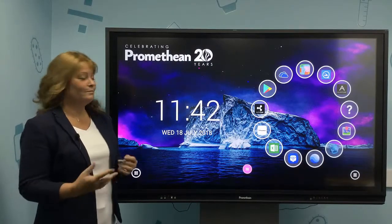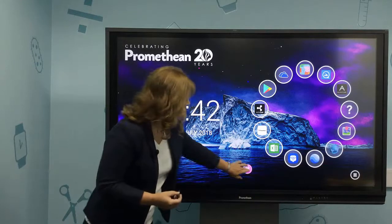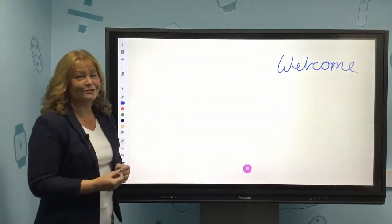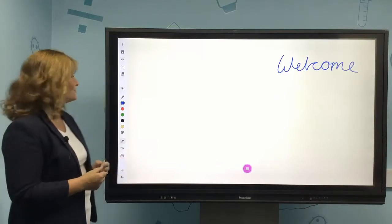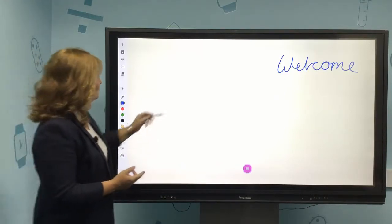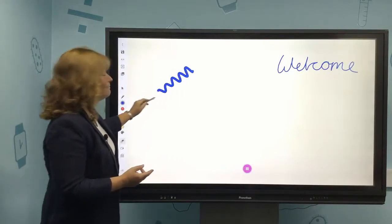To launch your Promethean whiteboard app, select the pink home button and then select the blue pen icon, and your app will launch on screen. If you have a pen, your pen will always be a pen on the screen without going to any tools at all.